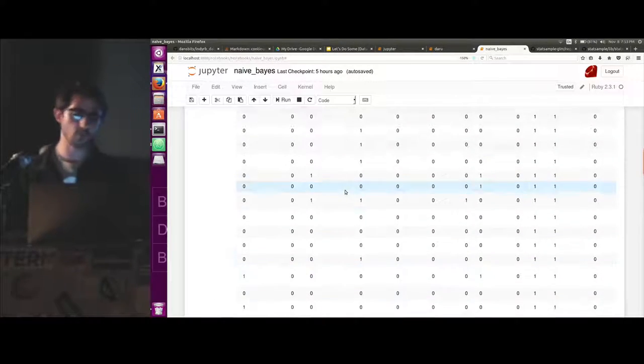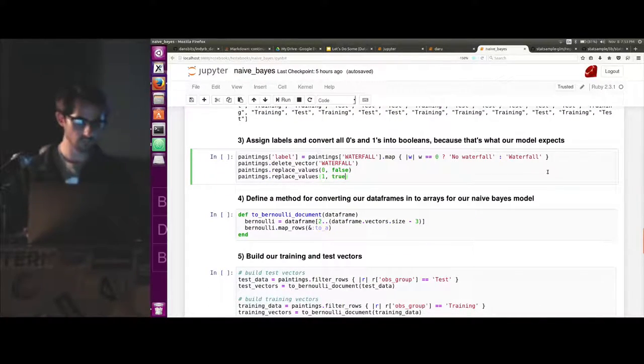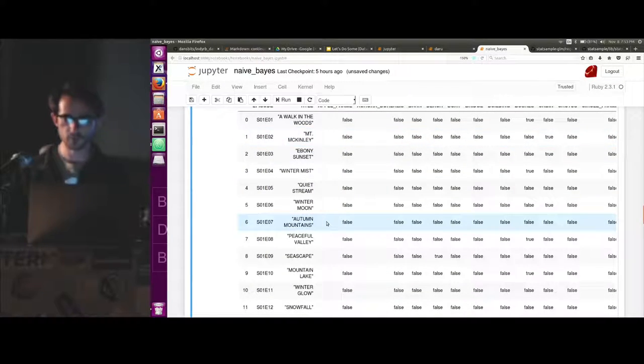Notice that these are all zeros and ones and not trues and falses. So this will replace values for a data frame. It'll just go through every element and every vector of the data frame. And in this case, if it sees a zero, it's going to replace it with false. So instead of zeros and ones, we now have a bunch of trues and falses.